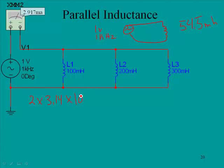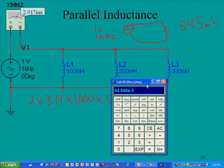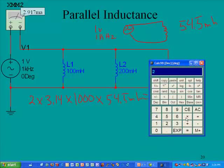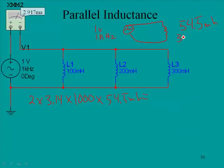To calculate the reactance of this circuit, we start with 2 times 3.14, which is π, times the frequency of 1,000, times the inductance of 54.5 millihenries. Using the calculator: 2 times 3.14 times 1,000 times 54.5 exponent minus 3 equals 342.2 ohms. That's our value XL, the total reactance of the circuit.